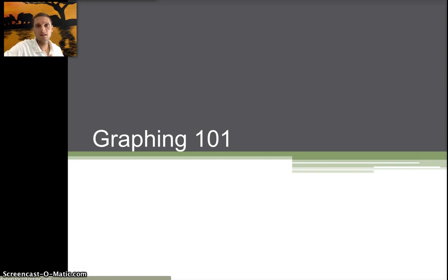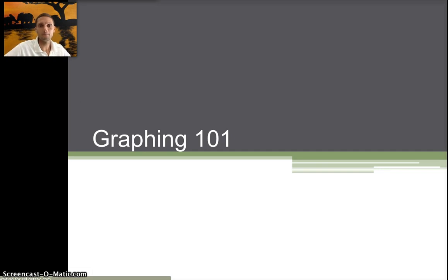We'll gain an understanding of how to create a graph, and in future videos we'll look at how to make graphs in Google Documents. So this is Graphing 101. What is data? Data is information gathered during an experiment or observations, and it can be recorded in things like tables. This right here would be a table, you could do different drawings or notes, like if you're drawing different cells.